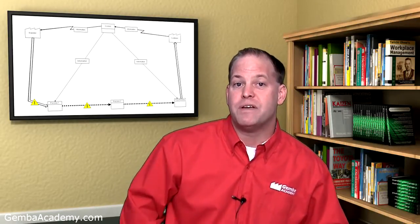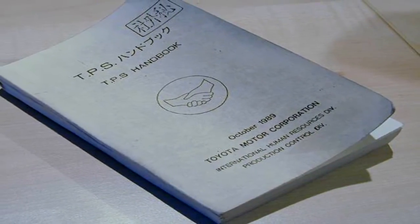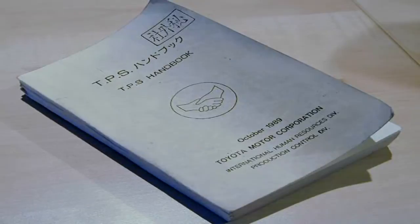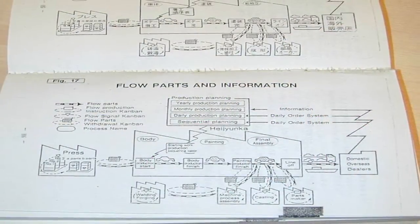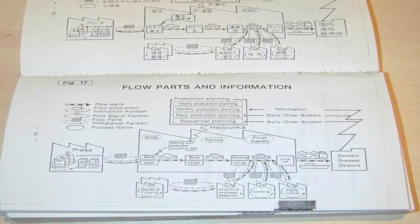The tool we call Value Stream Mapping finds its origins with the Toyota Motor Corporation, who first developed it as a tool for analysis and improvement. Oddly enough, Toyota doesn't actually call them Value Stream Maps. Instead, they refer to them as material and information flow diagrams.